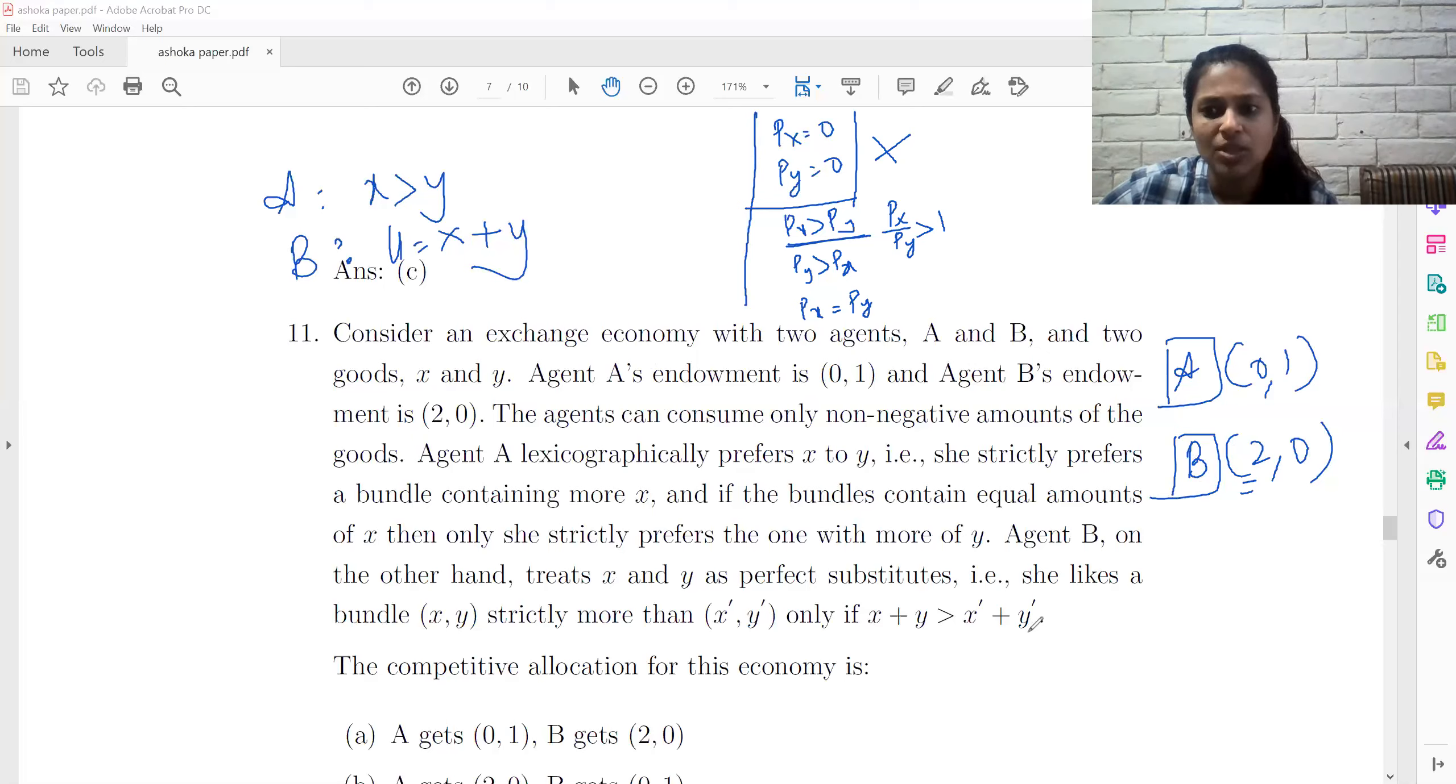So he would want to sell all of his good X and get more than 2 units of good Y.